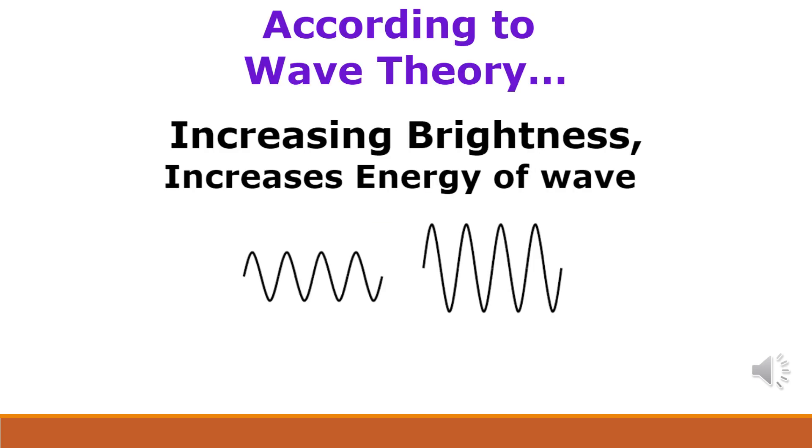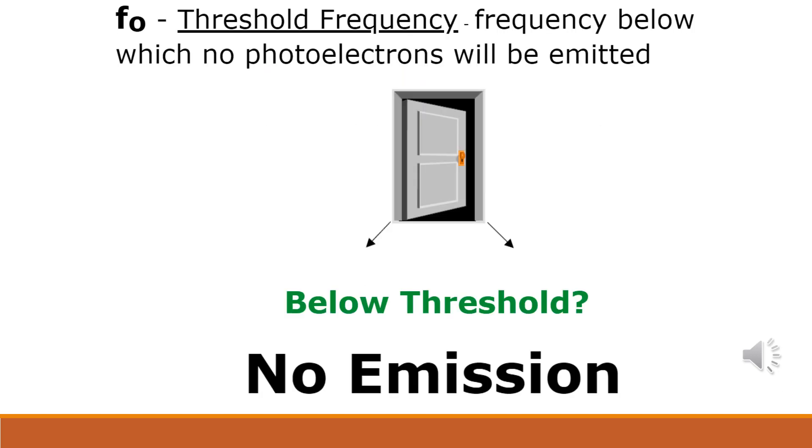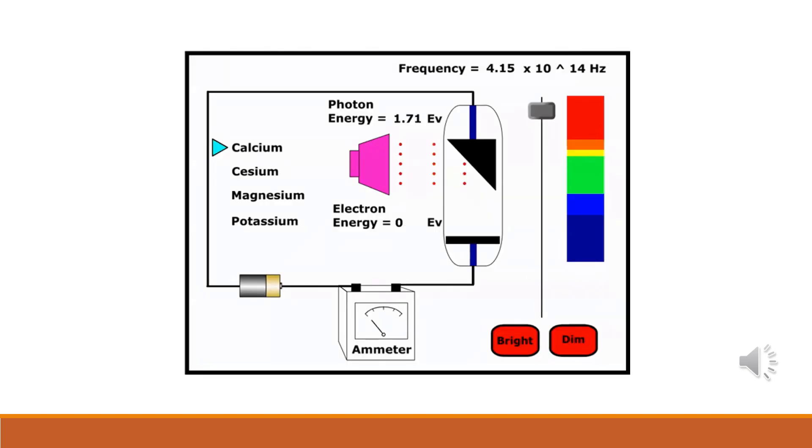Scientists wondered why the brightness of the light had no effect on the energy of the electrons emitted from the metal. They could not explain why when the light source was below a certain frequency, there was no amount of brightness that could cause the metal to emit electrons. In this animation above, you can see that the calcium does not emit electrons until the light source frequency approaches violet.